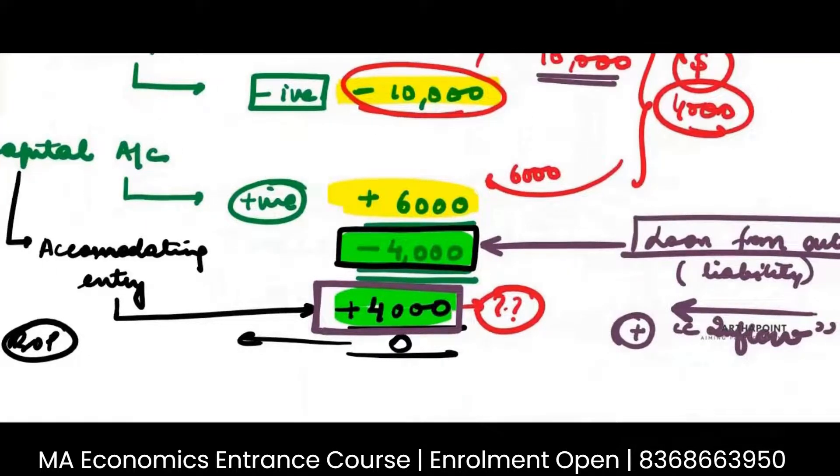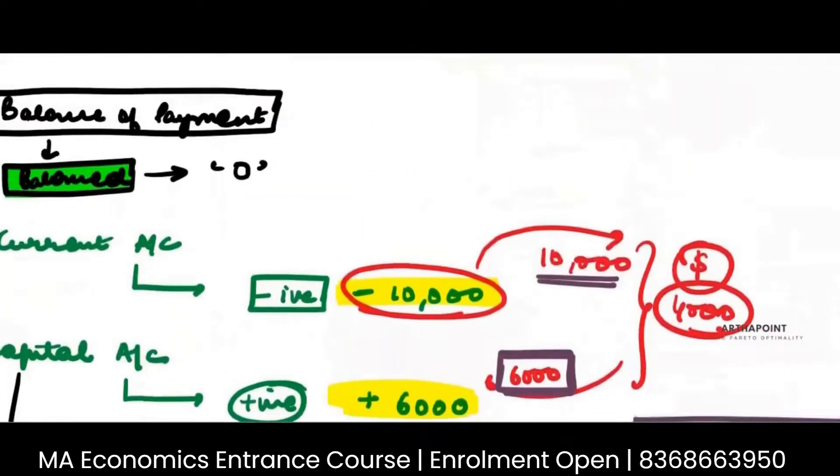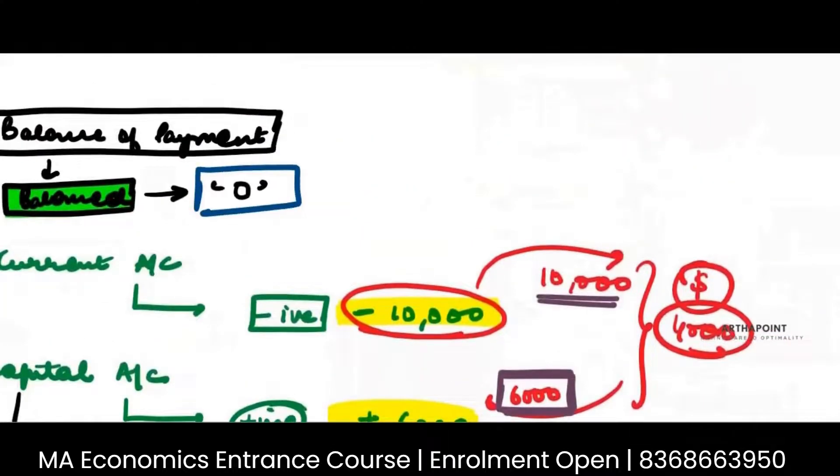is just saying that we spent 10,000, we only could recover 6,000, we are short of these 4,000. We need a loan or somehow we need to arrange these 4,000, maybe through our reserves, maybe by taking a loan. But we need these 4,000 rupees to somehow balance this out. So this becomes an accommodating entry in order to keep the balance of payment balance at zero.